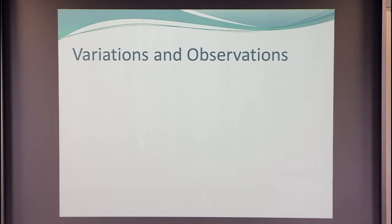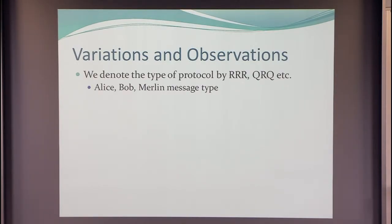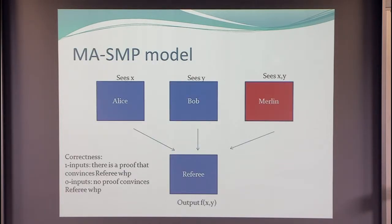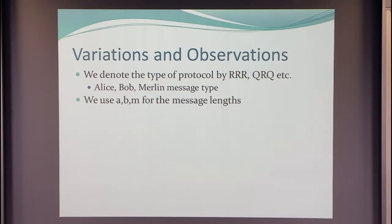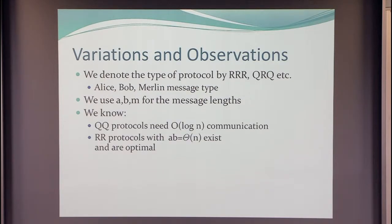We can denote the type of protocol depending on what the messages are — quantum or classical — using notation like R, R, Q, R, Q for Alice, Bob, and Merlin's message types, and we use A, B, and M for the message lengths. What we know is: if Alice and Bob are quantum, everything is log n and no prover is needed. Also, for every A and B such that A·B = N, you have an RR protocol with message length A for Alice and B for Bob — this is both an upper and a lower bound.